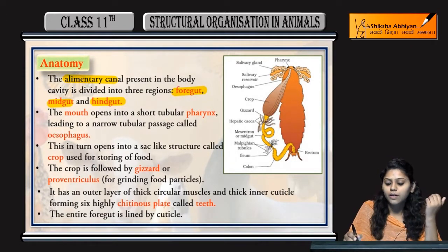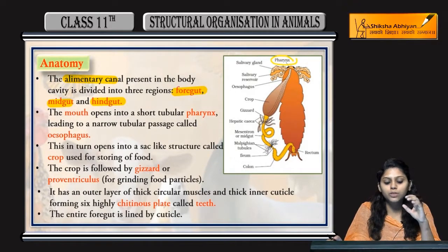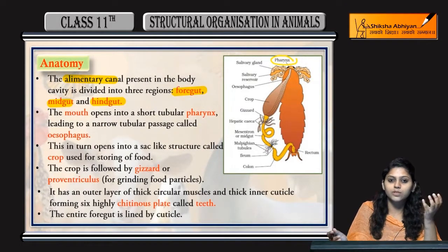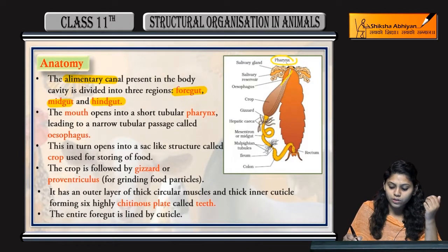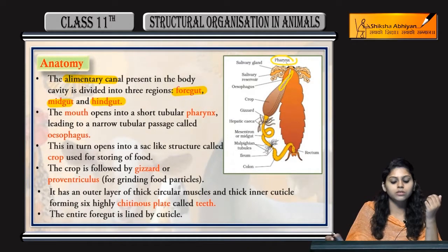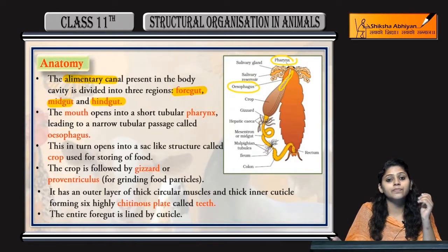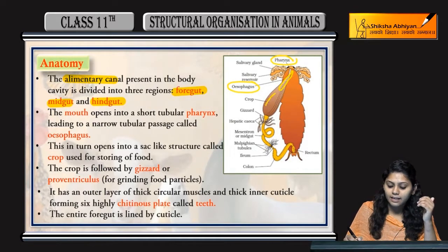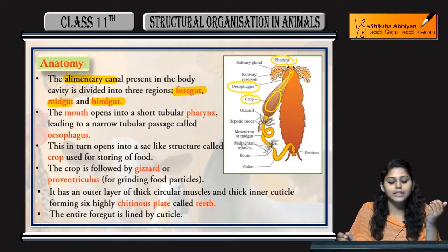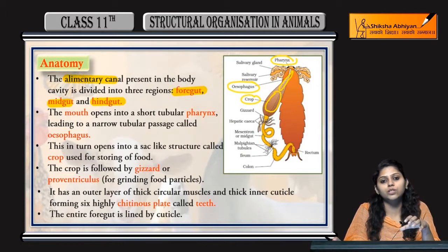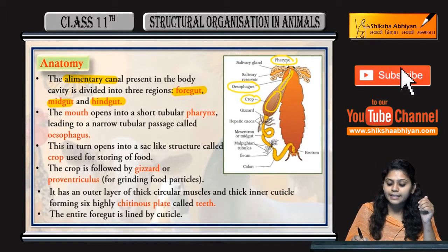The foregut starts from the pharynx, which is a short tubular structure. From the mouth it leads to a narrow tubular structure known as the esophagus, then a sac-like structure comes which is known as the crop, where food storage occurs.